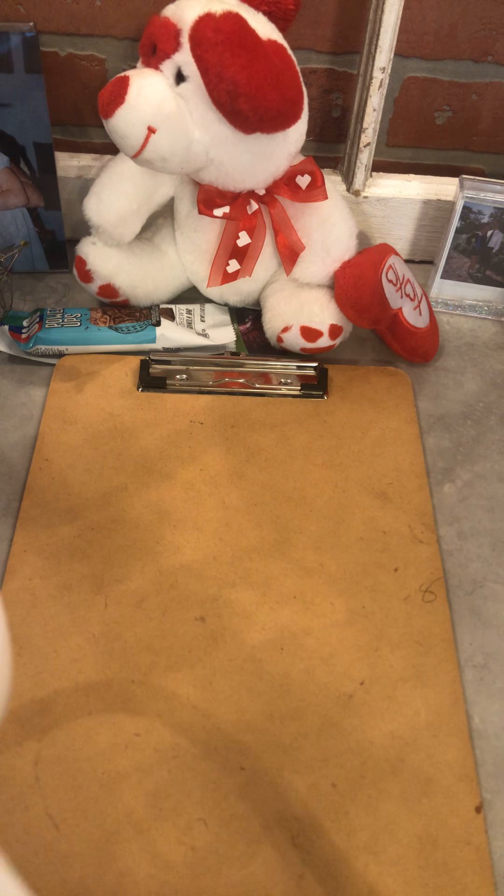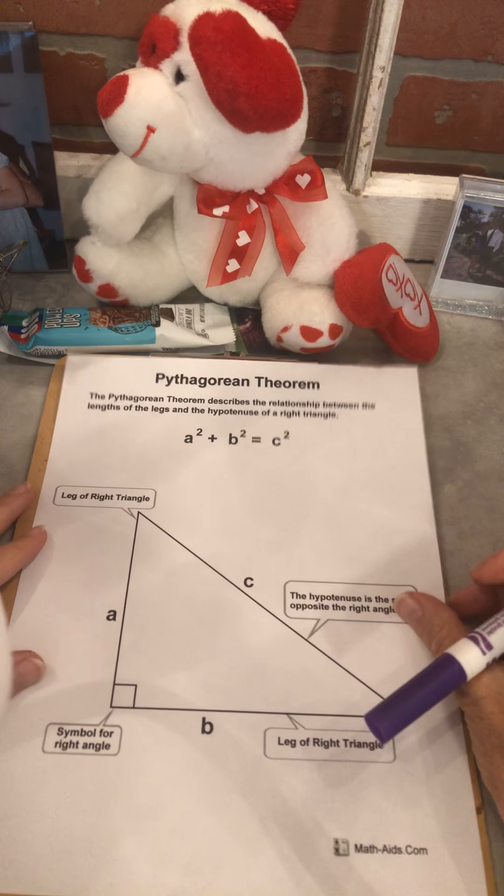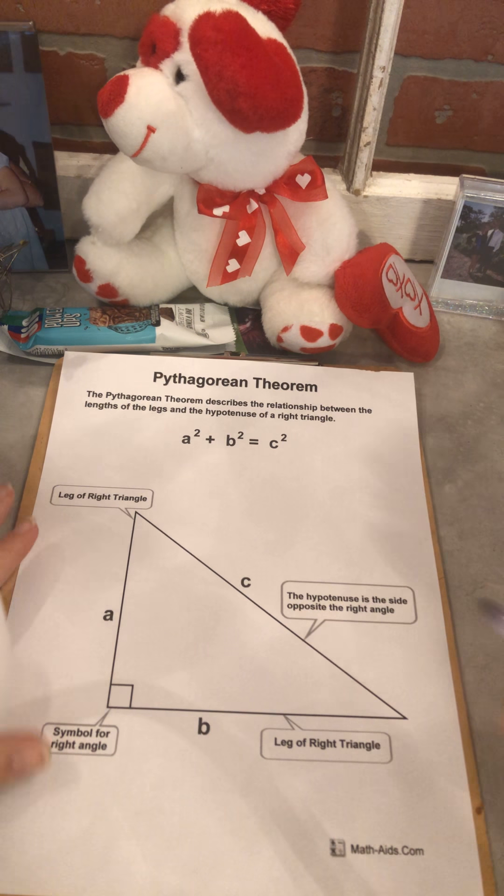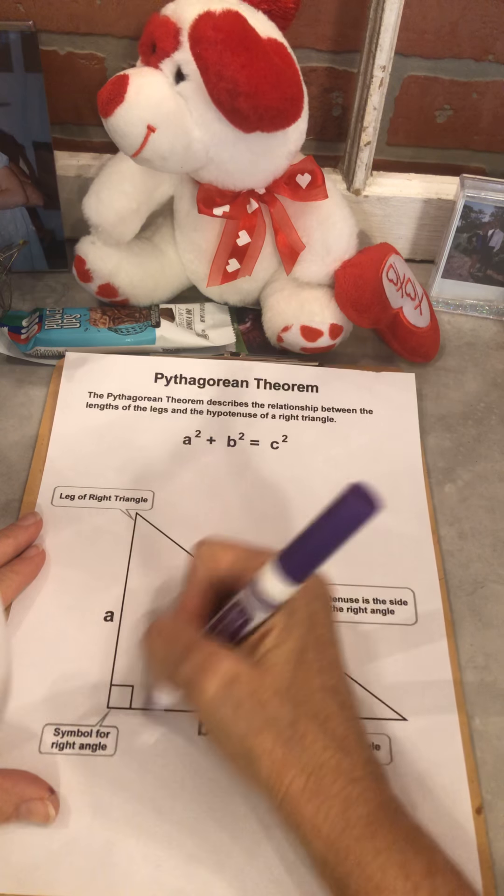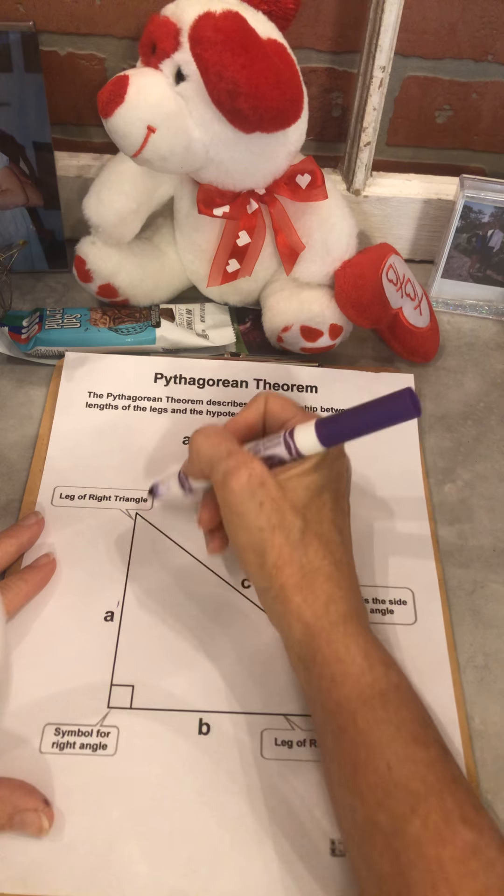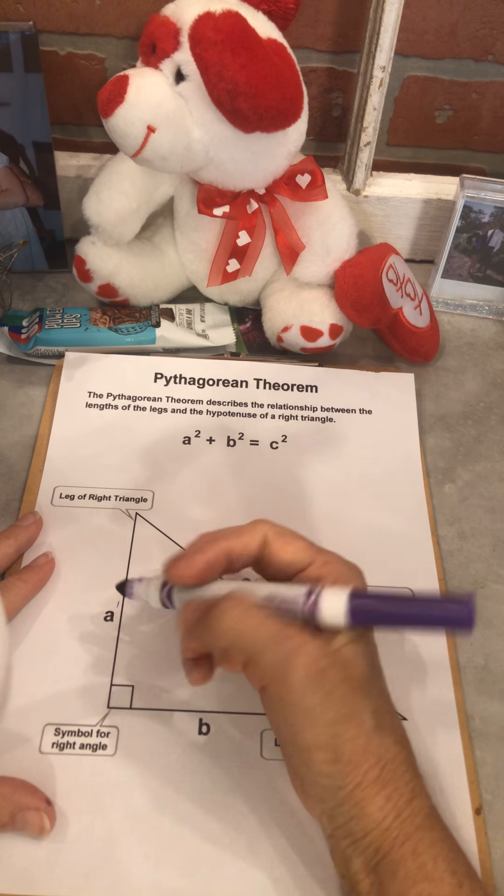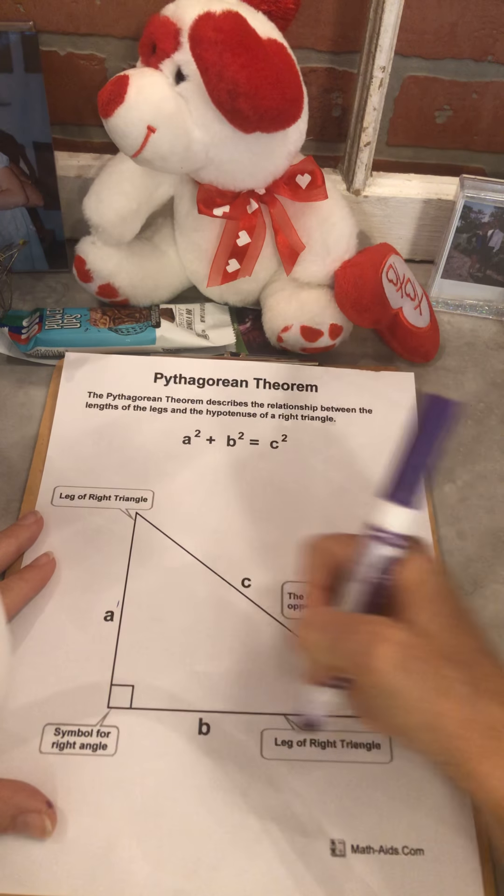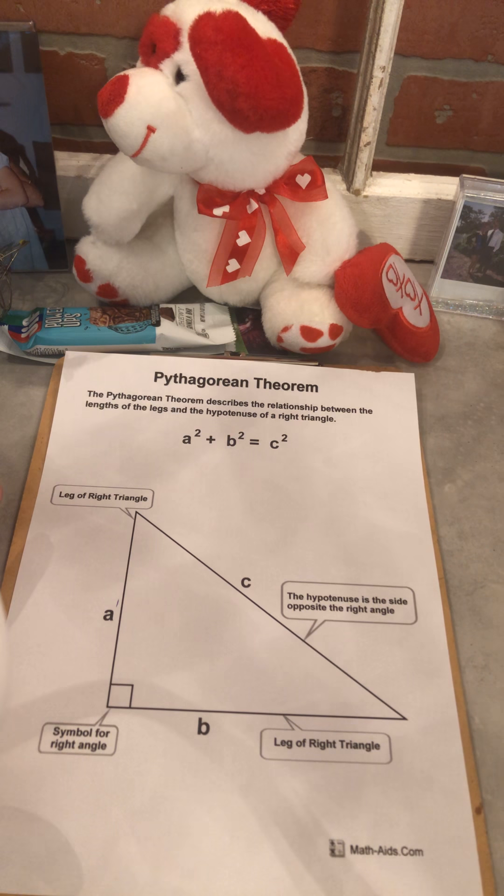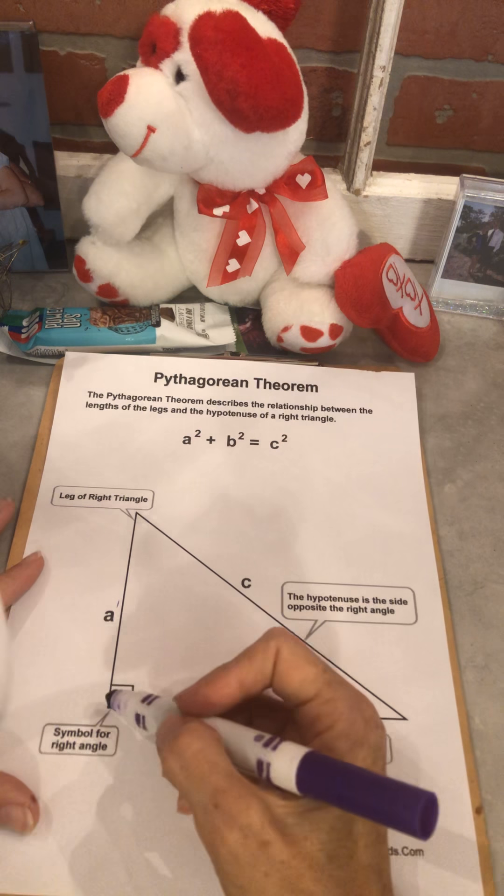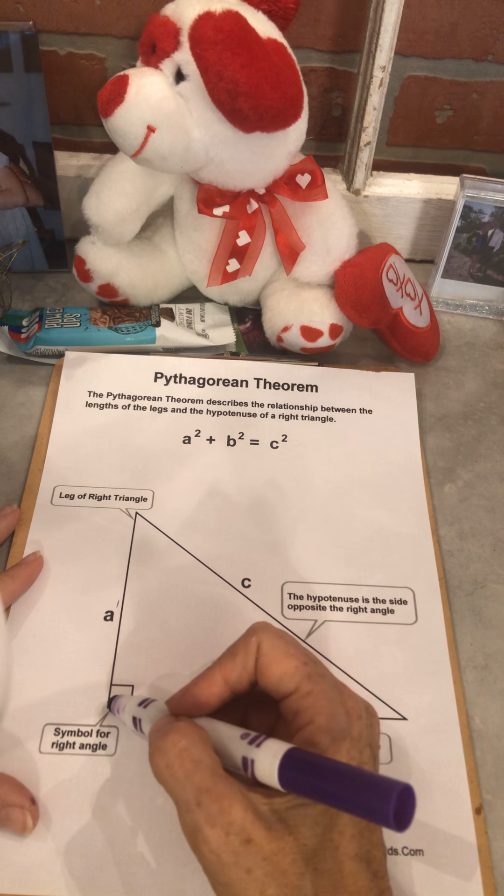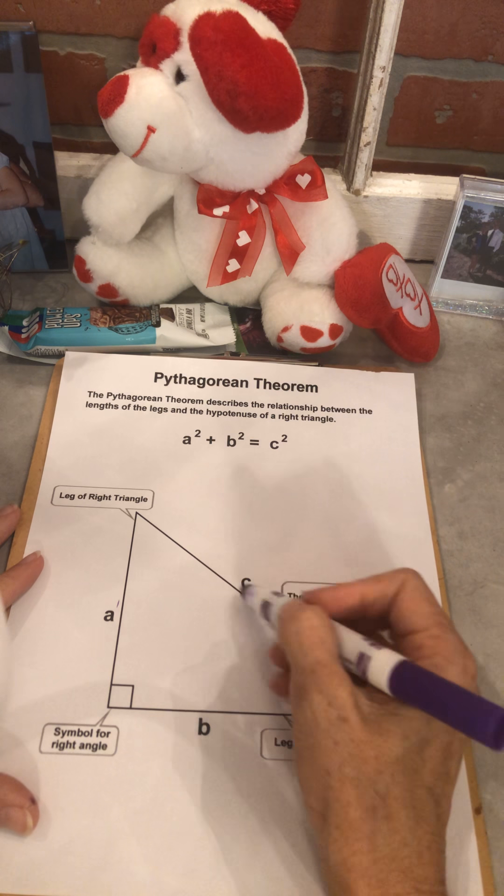All right, so that brings us to Pythagorean theorem. That was the background information you needed to know. Okay, this is the Pythagorean theorem. We have a right triangle. We have a, this is called a leg. Don't know why, I would call it a side. And this is called a leg. And this is key: this is called hypotenuse. Hypotenuse is the side opposite of the right angle.